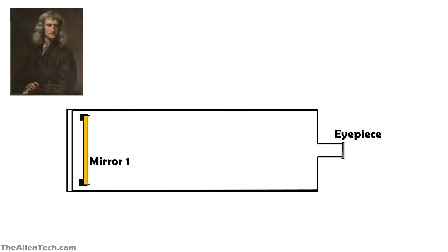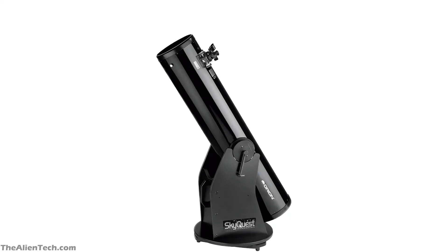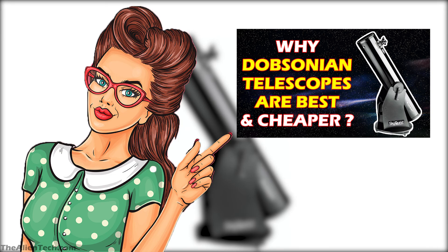Sir Isaac Newton came up with the idea of putting a plain mirror at an angle of 45 degrees at the front, diverting the light to the side of the telescope tube, which shifted the eyepiece to the side — these are also called Newtonian reflectors. Another type is the Dobsonian telescope, which is exactly the same as a Newtonian reflector, the only difference being that it uses a Dobsonian mount.